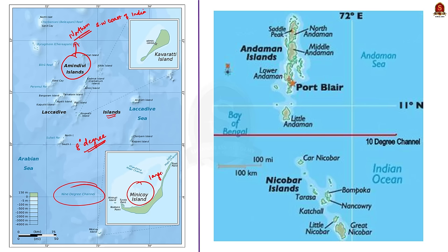Secondly, Andaman and Nicobar — it is a union territory of India located on the eastern part of the Indian Ocean. It comprises two island groups: Andaman and Nicobar. Both islands are separated by the 10-degree channel. Together the islands consist of 572 islands. The Barren and Narkondam islands, located north of Port Blair, are the only active volcanoes of India.